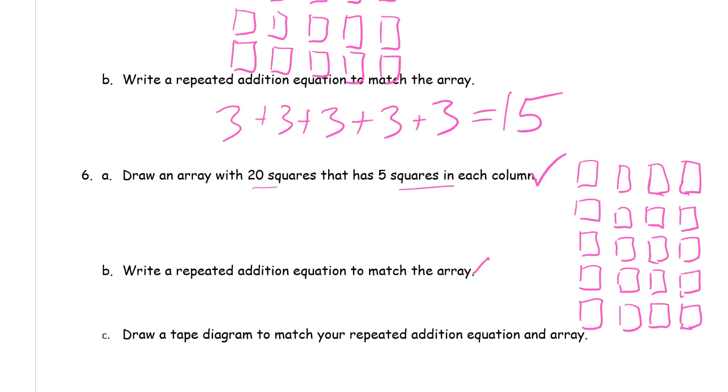5 squares in each column. 20 squares. Repeated addition equation to match the array. So that's 5s, right? So it's 4 5s. I need 5 plus 5 plus 5 plus 5. And, of course, equals 20 because we knew that before we even started drawing it.